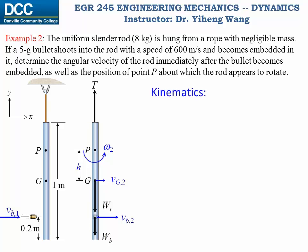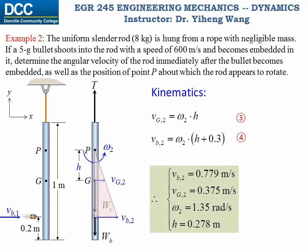Assuming point P is at distance h from point G, point P is the instantaneous center of zero velocity. From kinematics: VG2 equals omega2 times h, and VB2 equals omega2 times (h + 0.3 m). These are equations 3 and 4. With four equations and four unknowns — VG2, VB2, omega2, and h — we can solve for all of them, and this completes the problem.